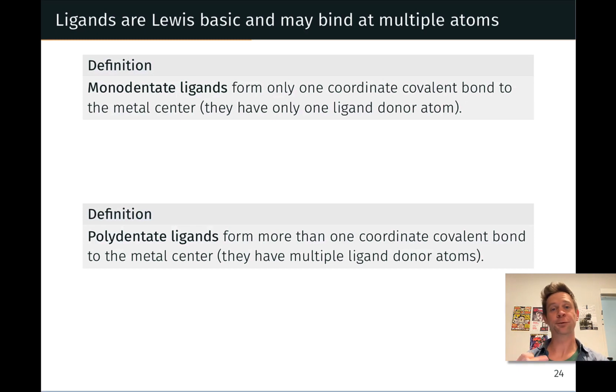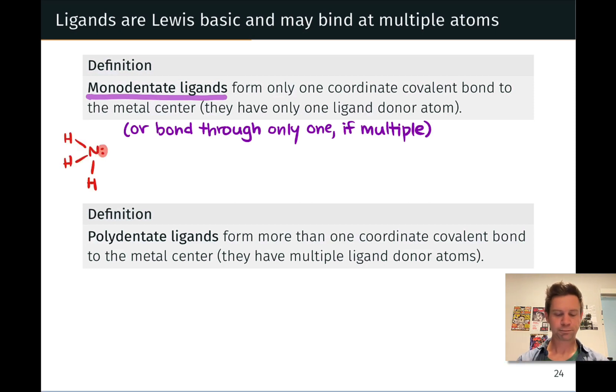Monodentate ligands form only one coordinate covalent bond, or bond through only one ligand donor atom. Ammonia is a great example of a monodentate ligand. Really the only atom that is Lewis basic in ammonia is the nitrogen, and so it can only bond through one point, through one ligand donor atom, and thus it is a monodentate ligand by definition based on its structure.